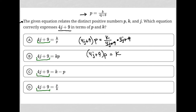One step left to isolate 4j plus 9 is to divide both sides of this equation by p. That way the p's cross out on the left, and I'm left with 4j plus 9 on the left-hand side, which is what I want. That's equal to k over p. The answer choice that matches that is choice A, so choice A is the correct answer.